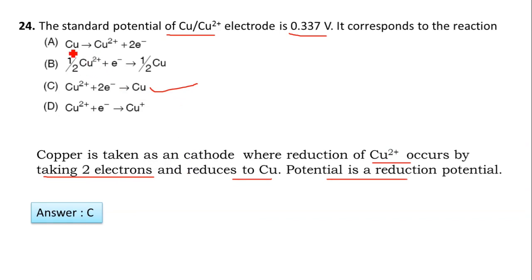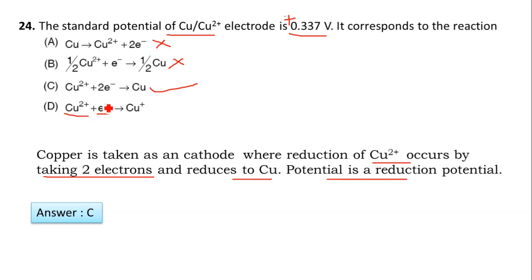In option A, copper gives Cu²⁺, which is an oxidation reaction — ruled out. A plus value of +0.337 V indicates a reduction potential. In another option, Cu²⁺ is reduced to Cu but only one electron transfer occurs — that is also ruled out. Cu²⁺ takes two electrons to become Cu. Options A, B, and D are ruled out; option C is correct.